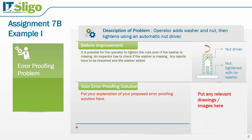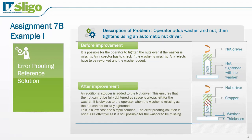One sample solution is to put a stopper onto the nut driver so the nut can only be tightened as far as the gap allows for the washer thickness. If the washer is missing, it would be obvious to the inspector. However, this isn't 100% effective — it is definitely low cost and simple, but it is still possible for the operator to let the part go through with the washer missing.